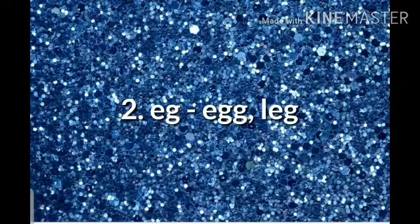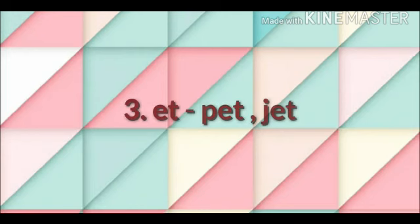Number 2: A, G, G. Example — A, G, G: Egg. Next, L, A, G: Leg.